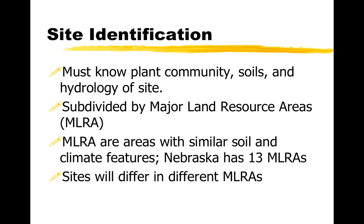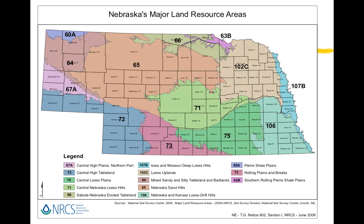These MLRAs are areas with similar soil and climate features, and we find 13 of them in Nebraska. The sites will differ from one MLRA to another. Here's a map of the major land resource areas for Nebraska. For example, here in Atkinson, we are on the verge between Sandhills, which is 65, and 66, which is Dakota, Nebraska, eroded table land.